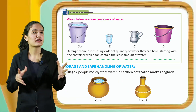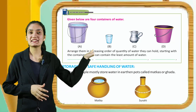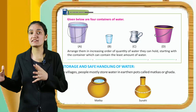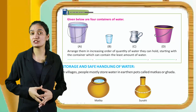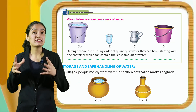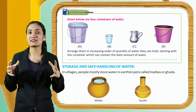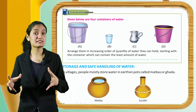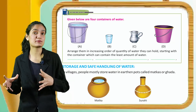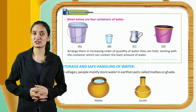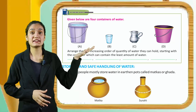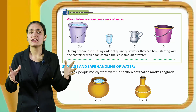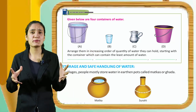Activity: Given below are four containers of water — A, B, C, and D. Arrange them in increasing order of quantity of water they can hold, starting with the container which can hold the least amount of water.